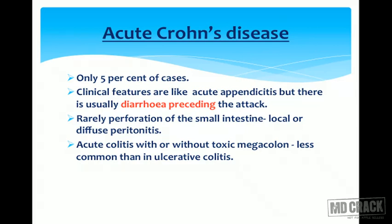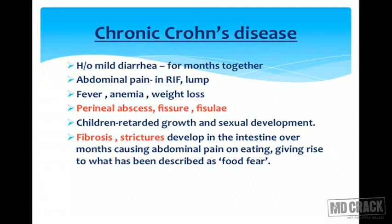Acute colitis with or without toxic megacolon is less common than in ulcerative colitis. In chronic Crohn's disease, there will be a history of mild diarrhea for months. There will be abdominal pain in the right iliac fossa, and a lump might be palpable as the ileocolic region is involved. Fever, anemia, and weight loss will be seen. Perianal abscess, fissure, and fistula are common. Children may show retarded growth and sexual development.